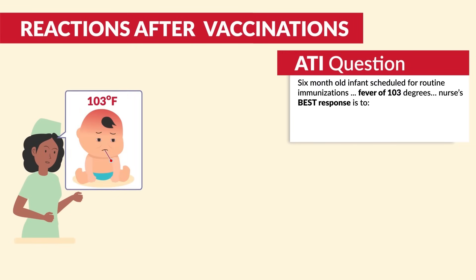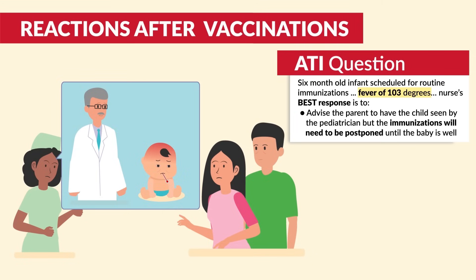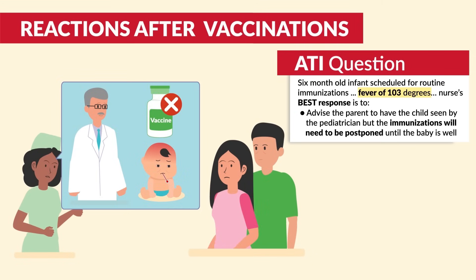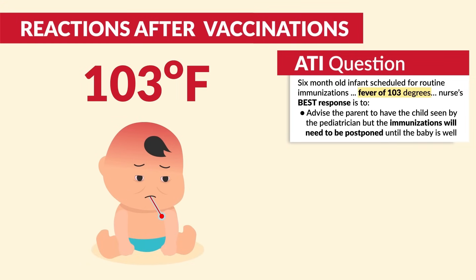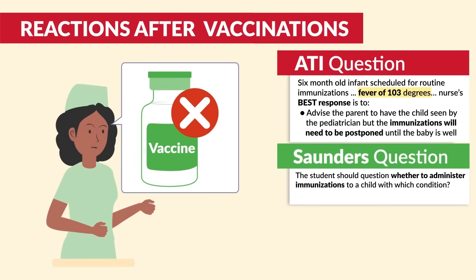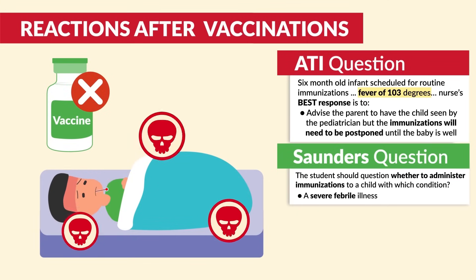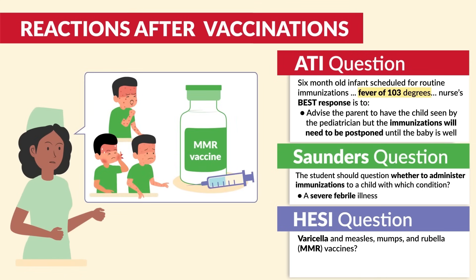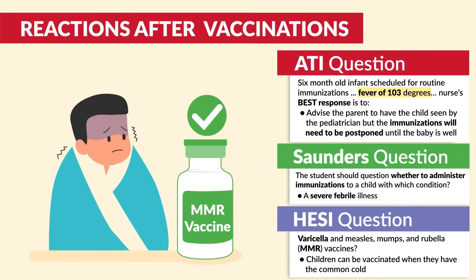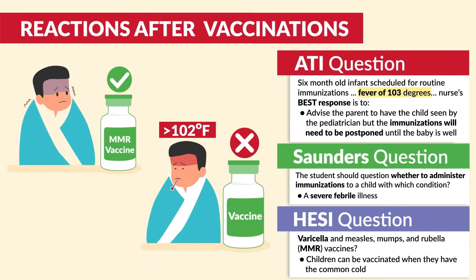ATI mentions: a six-month-old infant scheduled for routine immunizations with a fever of 103 — the nurse's best response is to advise the parents to have the child seen by the pediatrician, as the immunizations will need to be postponed. The key number is 103, way above 102. Saunders: the student should question whether to administer immunizations to a child with a severe febrile illness — the key term is severe. HESI: varicella and MMR vaccines — children can be vaccinated when they have the common cold. The key term is common cold; we still give the vaccines, but avoid them with severe febrile illnesses.